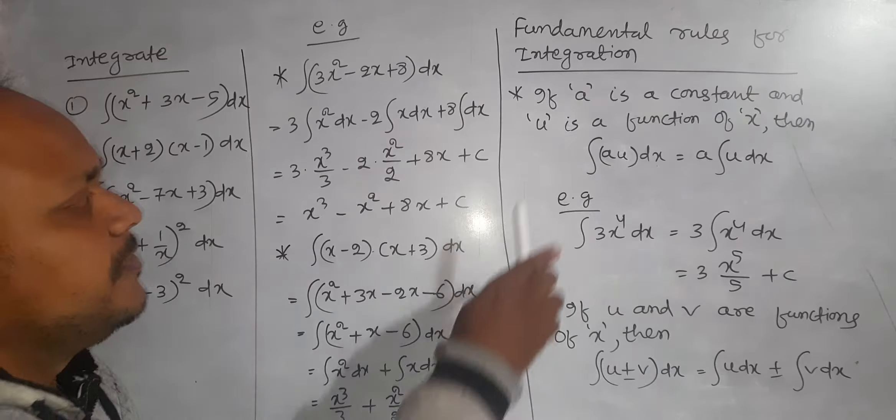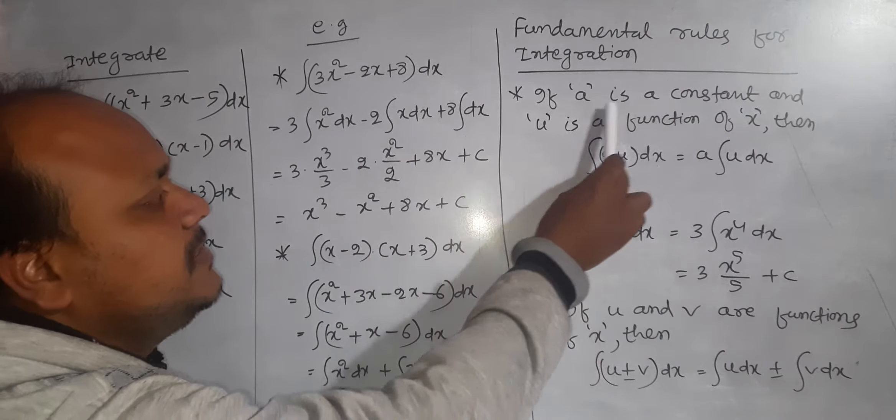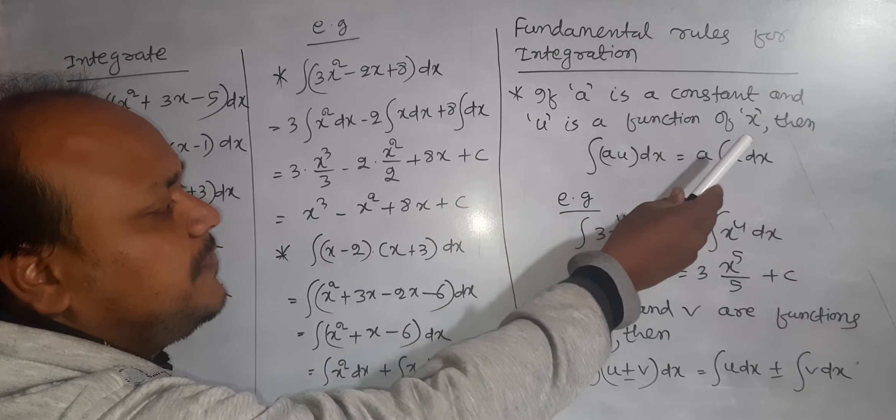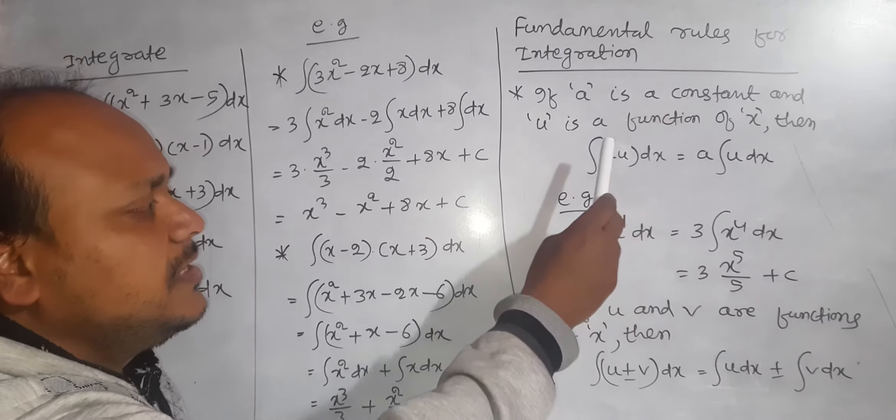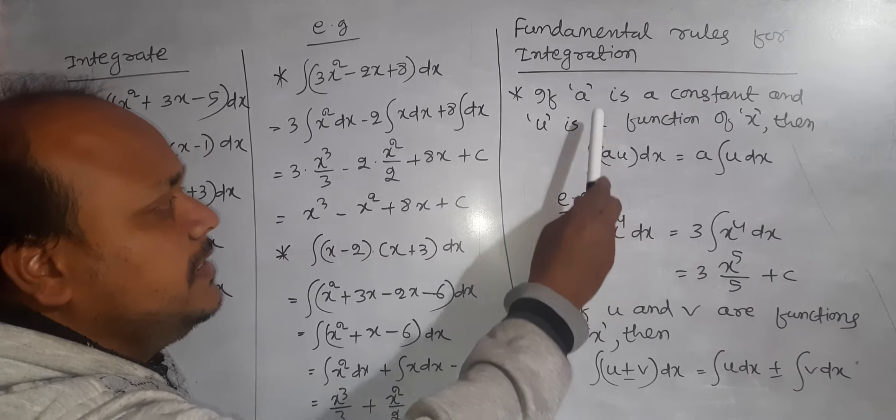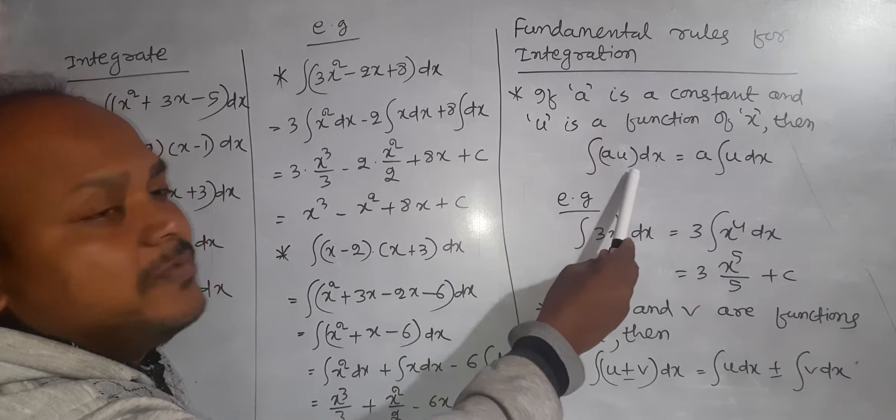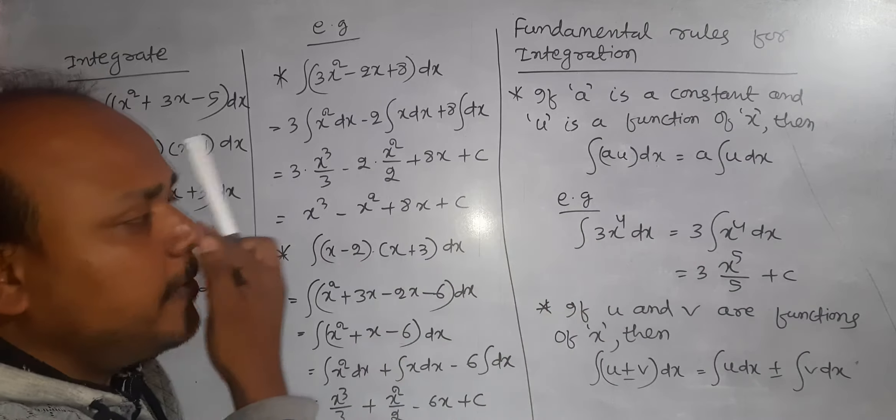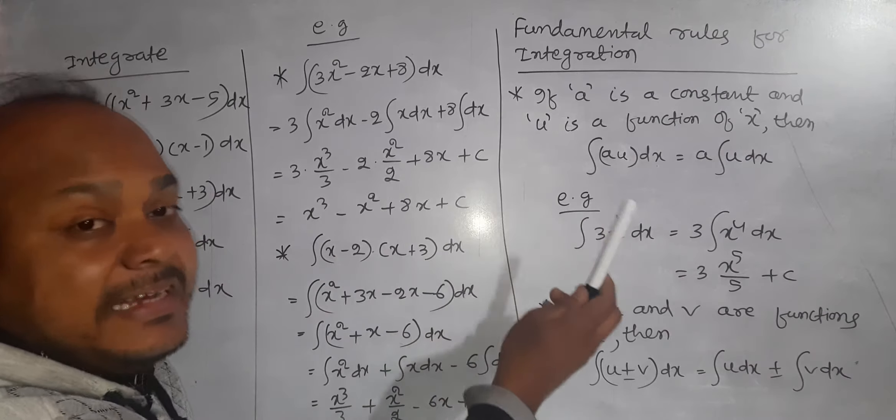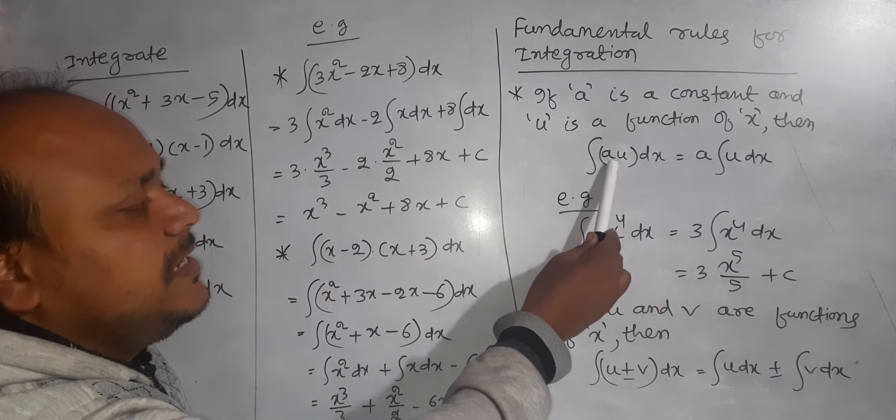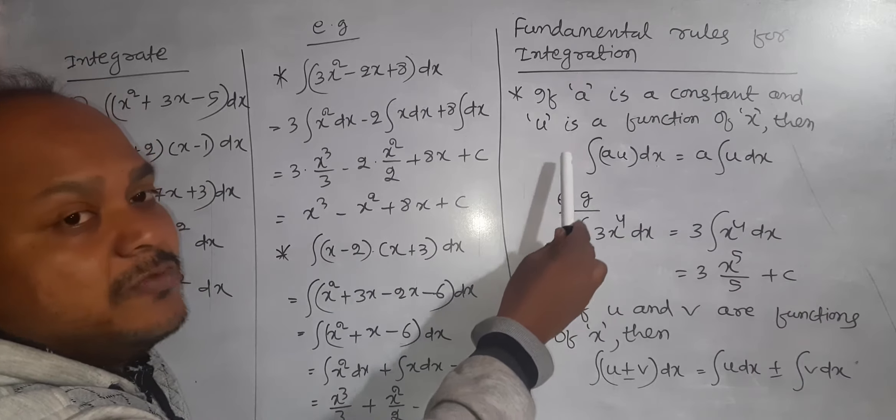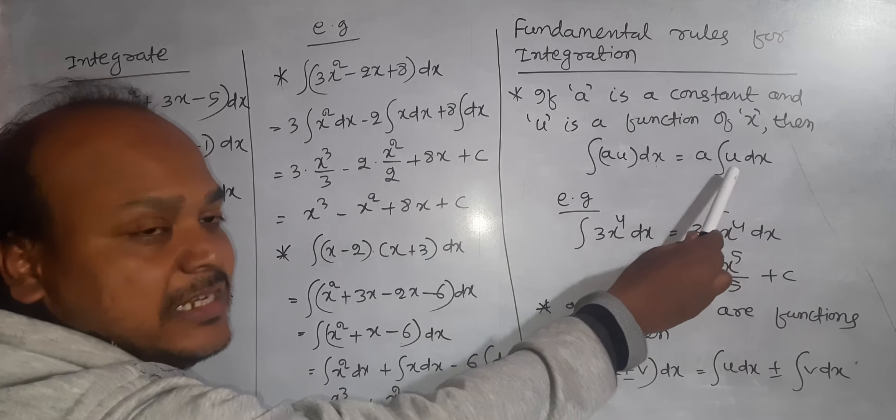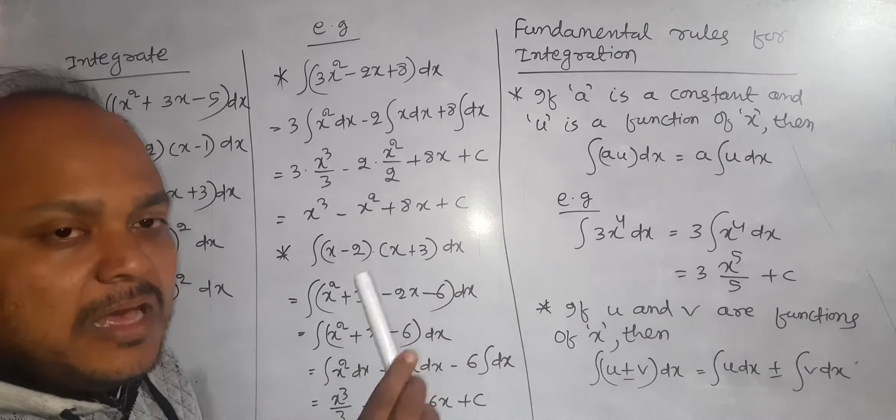The first rule is, if a is a constant and u is a function of x, that is sin x, cos x, or x square, x cube, anything, and the two things, the constant and the variable, are multiplied with each other, we have to find out the integration of both. Then like derivative, the constant can be taken out from the integration and we have to find out the integration of only the variables.